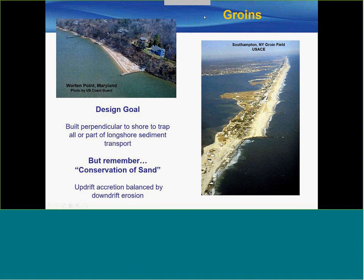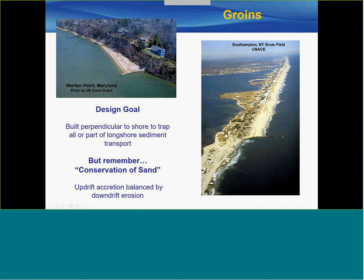Coastal groins have been widely used, preferred by some because they do result in a sandy shoreline. But the design goal of a groin is literally to trap part of the longshore transport. Coming back to conservation of sand, every grain trapped on one side is a grain that never makes it to the other side. With a groin field, every groin is trapping something and the downdrift area has to account for the entire deficit of sand. Updrift accretion and downdrift erosion have to be in balance.